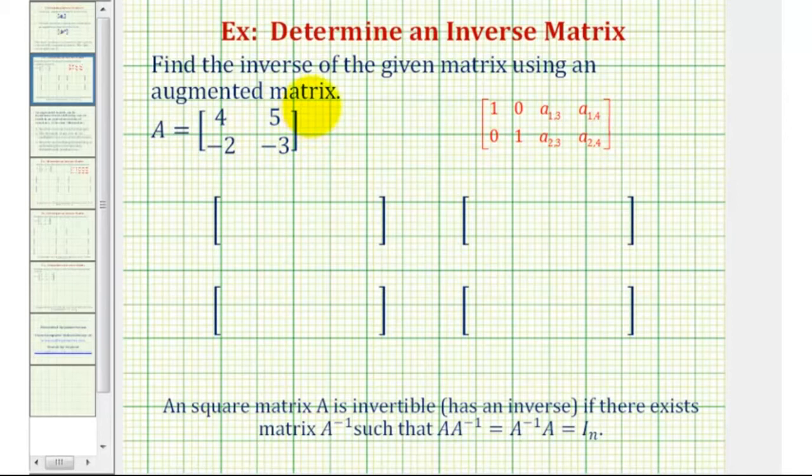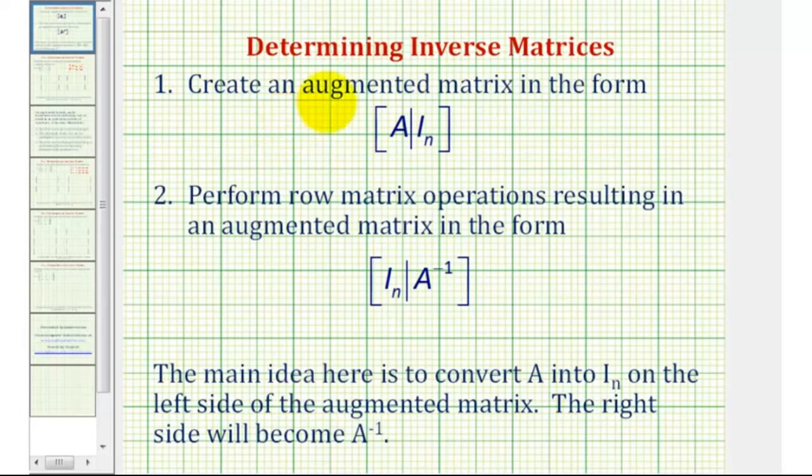Welcome to an example on how to find the inverse of a 2 by 2 matrix using an augmented matrix. We first start by creating an augmented matrix in the form where the left side is the given square matrix and the right side is the identity matrix.